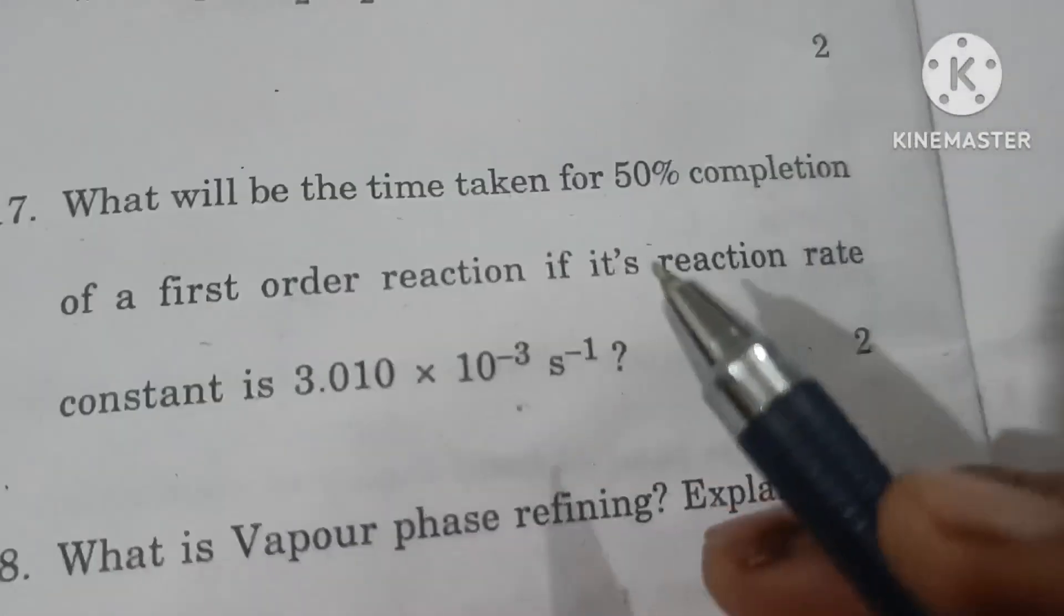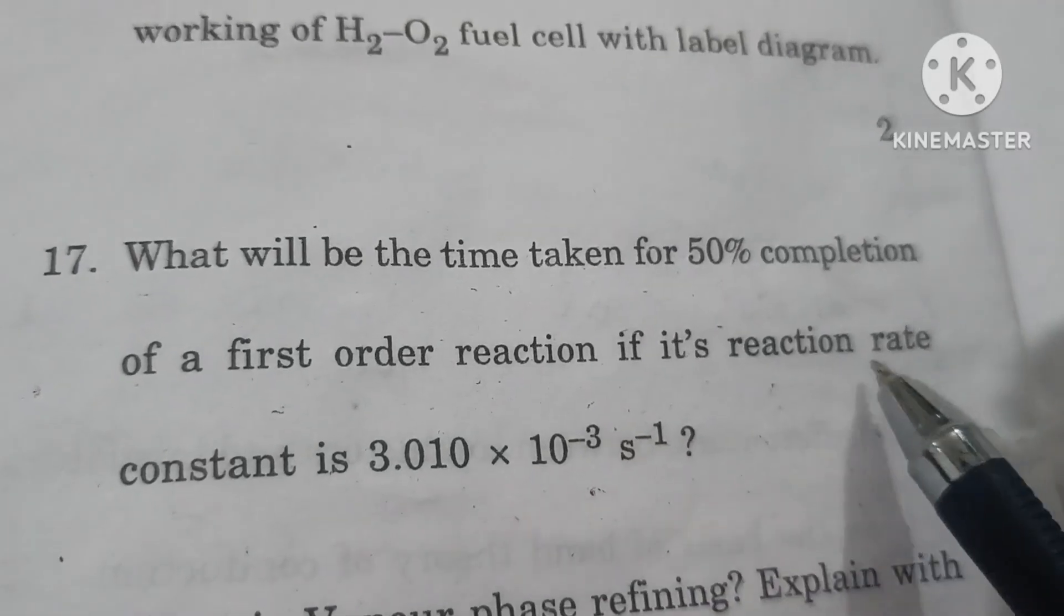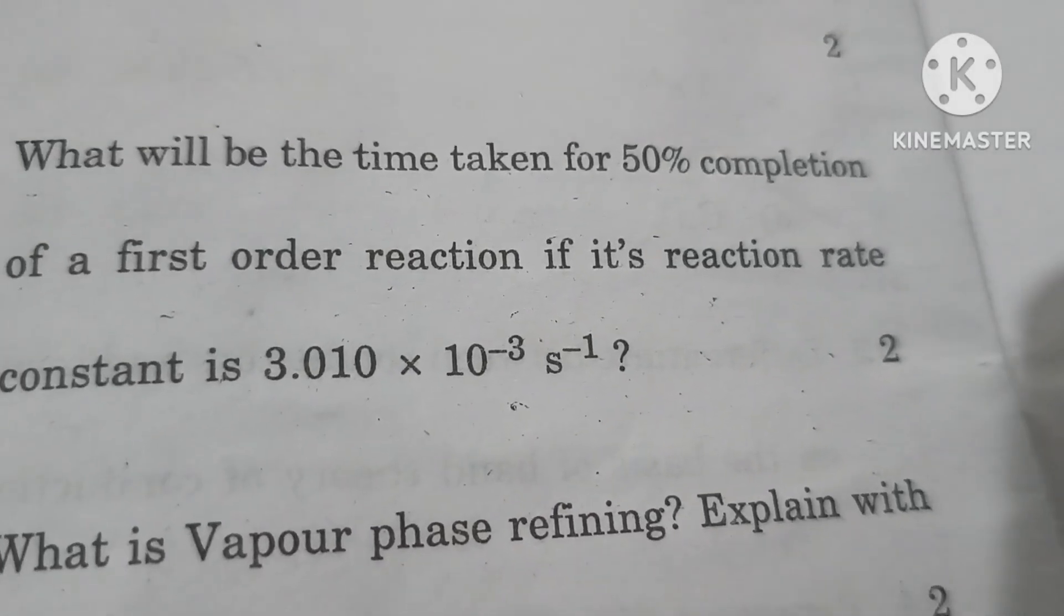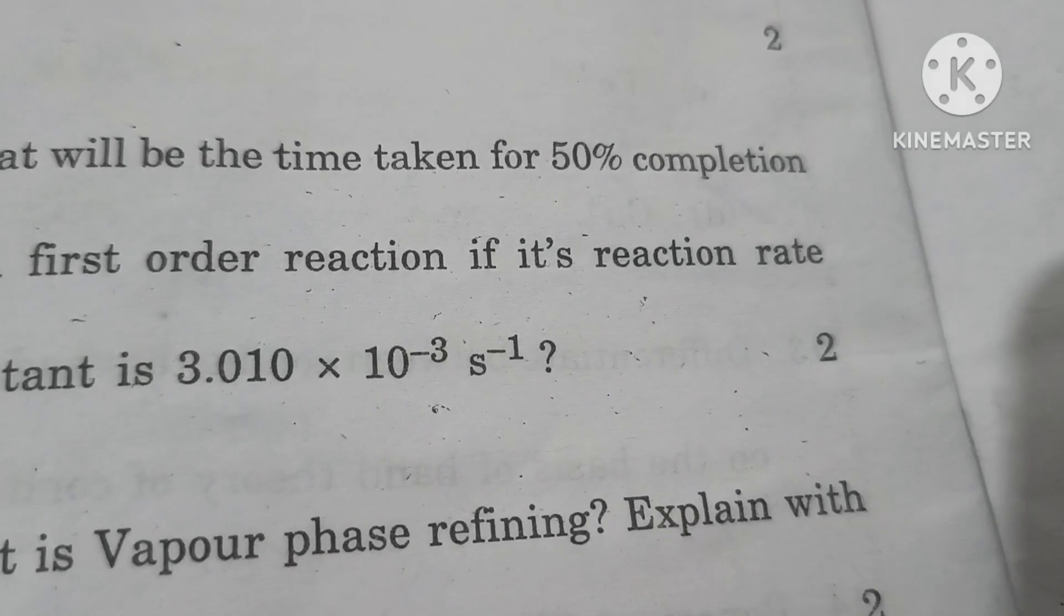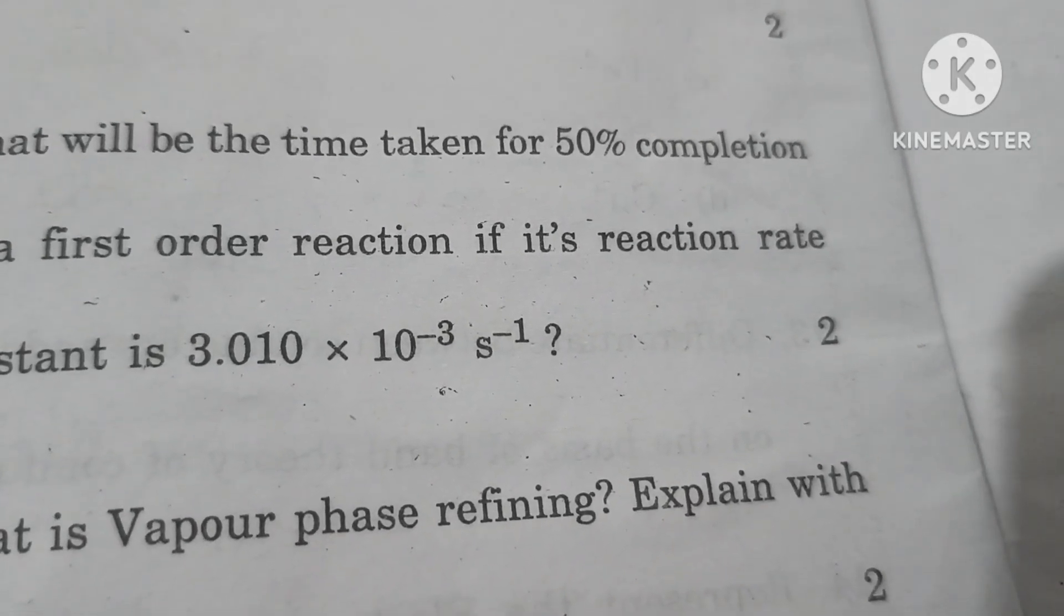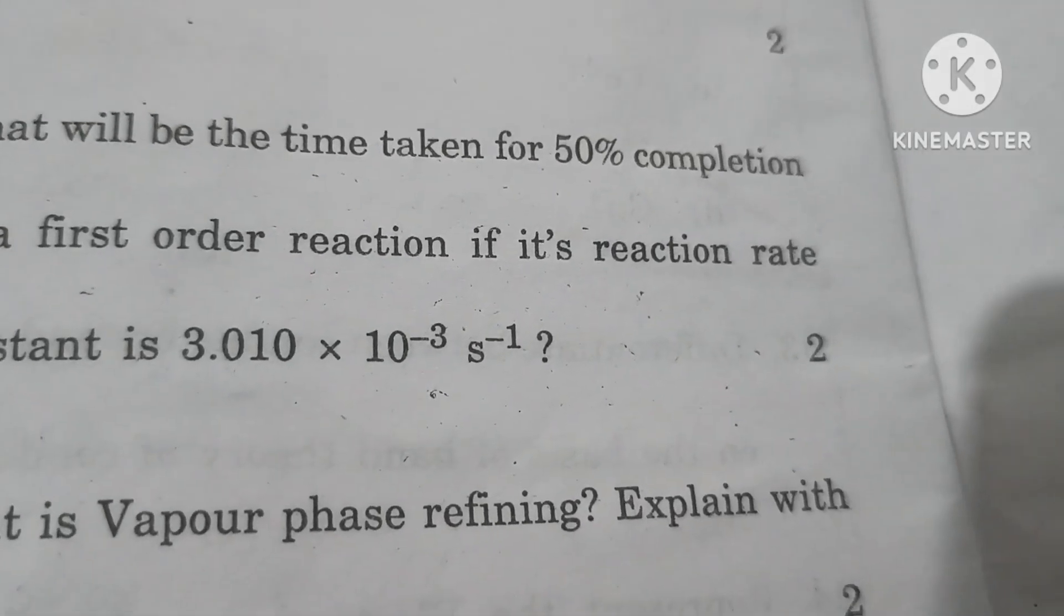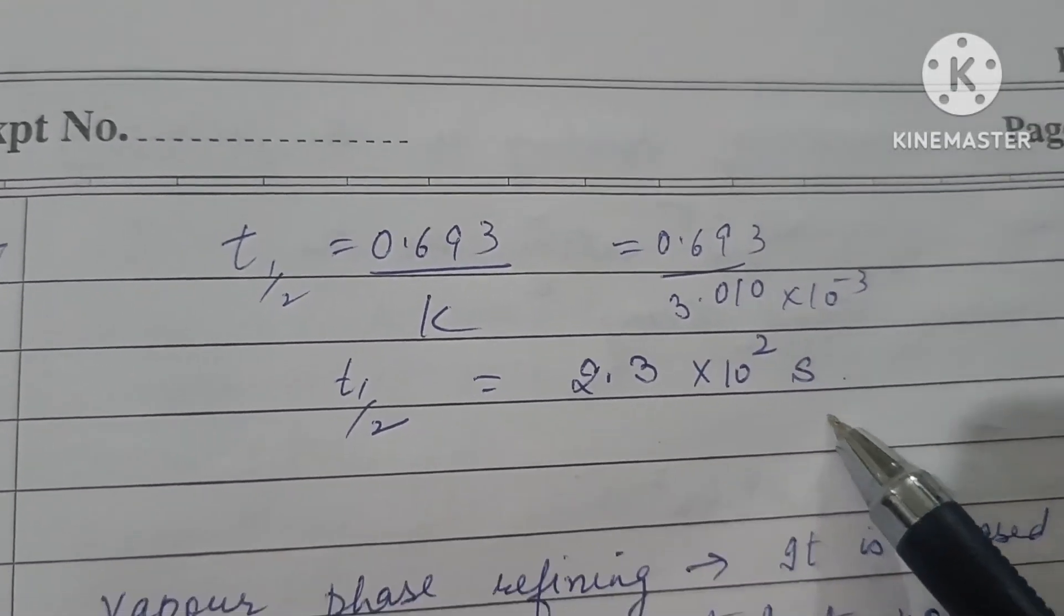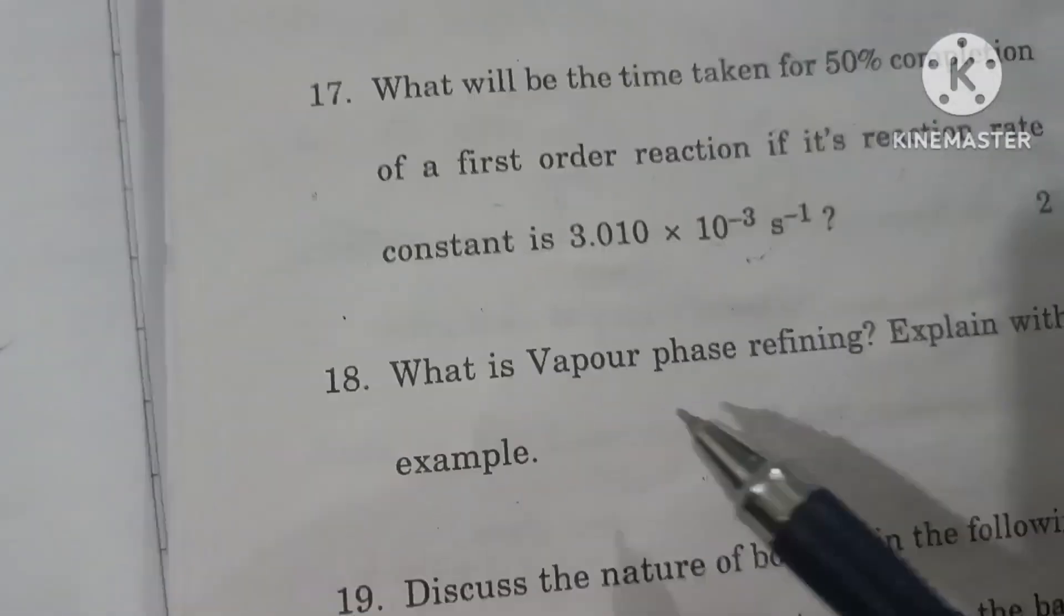What will be the time taken for 50% completion of a first order reaction if its reaction rate constant is 3.010 times 10 to the power minus 3 second inverse? T half of a first order reaction is 0.693 upon k. So t half equals 2.3 times 10 raised to power 2 seconds.